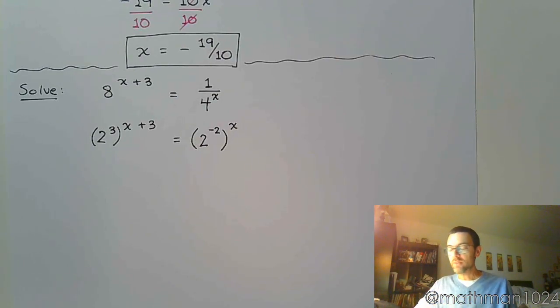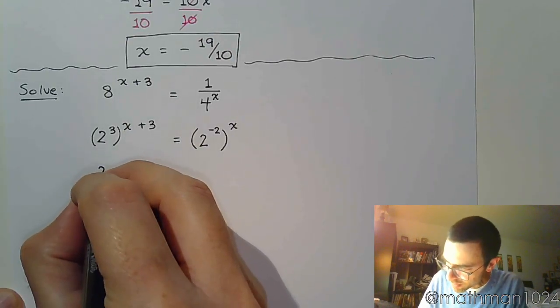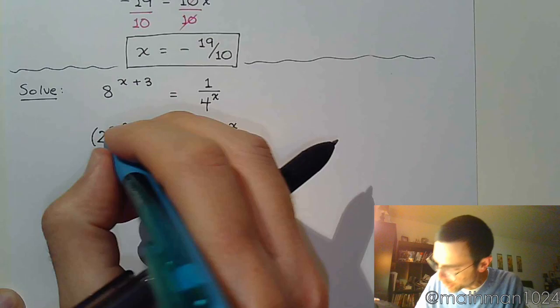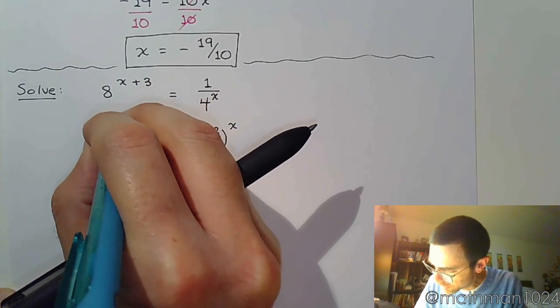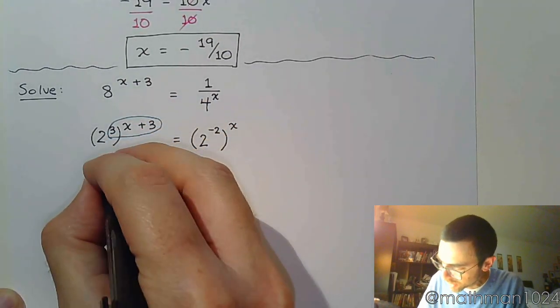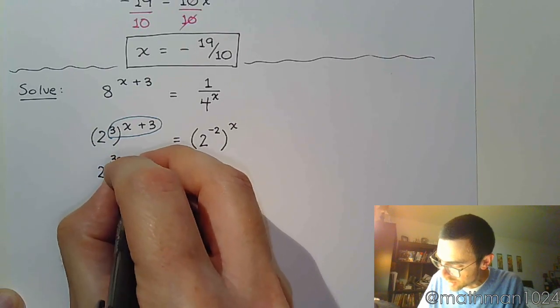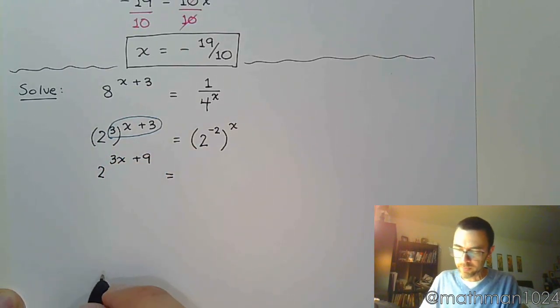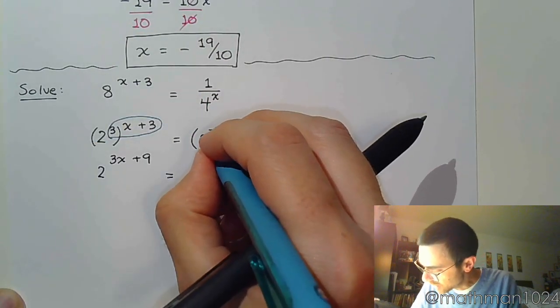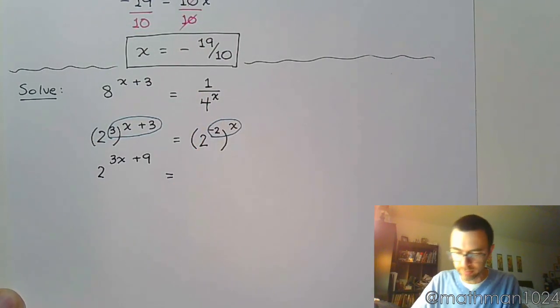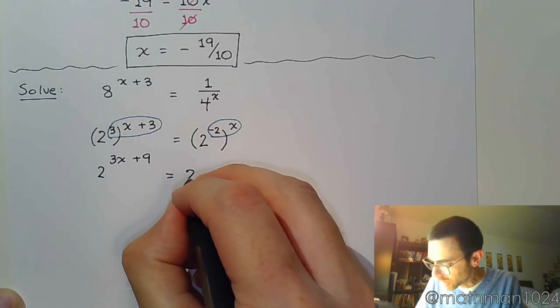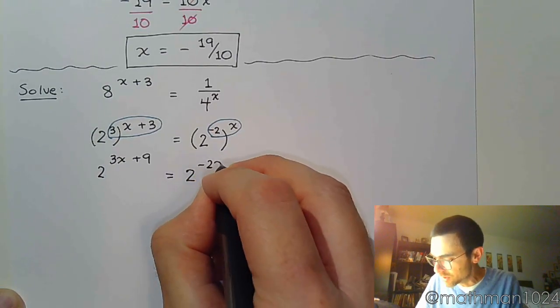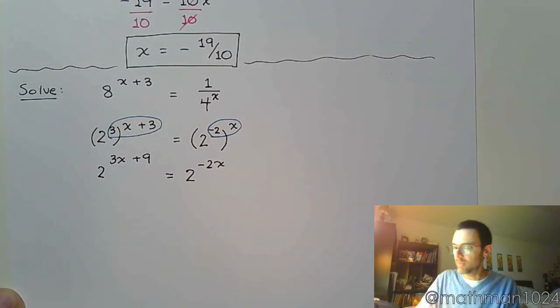So, we now have a common base, so we need to rewrite and work with these expressions. So, this is 2. Remember, power to power, you're going to multiply. This becomes 3x plus 9. On the other side here, you're going to multiply these guys, again, power to a power. So, that's 2 to the negative 2x.